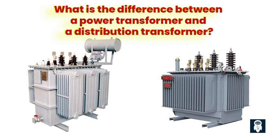Second, iron losses and copper losses: power transformers lose energy as heat due to current losses in their steel laminations and hysteresis losses in the core material. Distribution transformers have lower iron losses than power transformers. They also lose energy due to hysteresis losses in the core material, but these are much smaller because distribution transformers are smaller and don't generate as much heat as power transformers when carrying heavy currents.